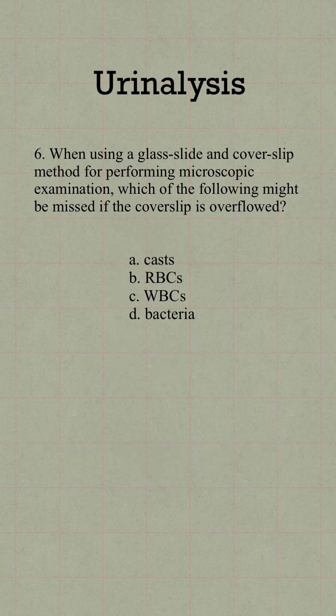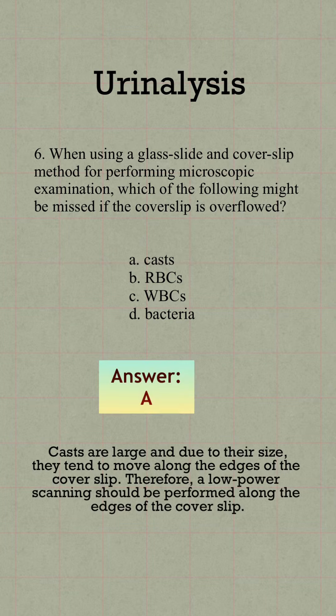Number 6. When using a glass slide and coverslip method for performing microscopic examination, which of the following might be missed if the coverslip is overflowed? The answer is A. Casts are large, and due to their large size, they gather along the edges of the coverslip.